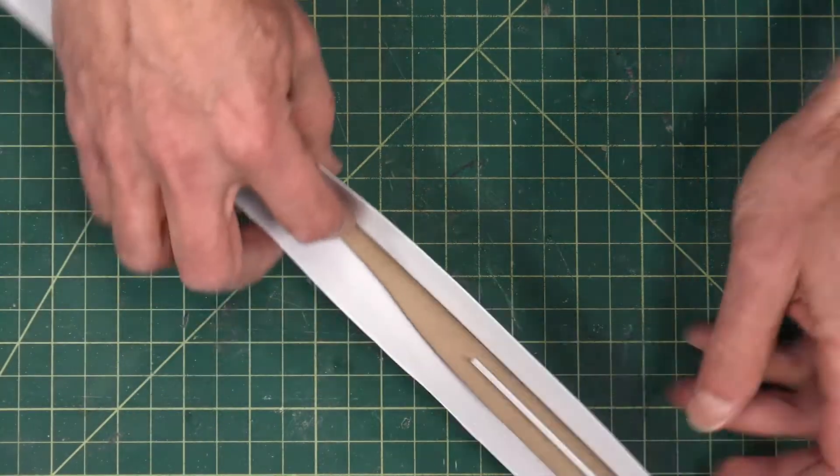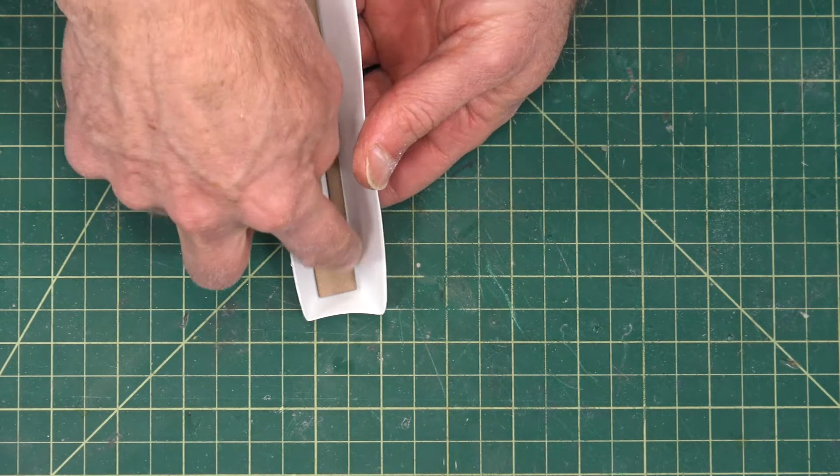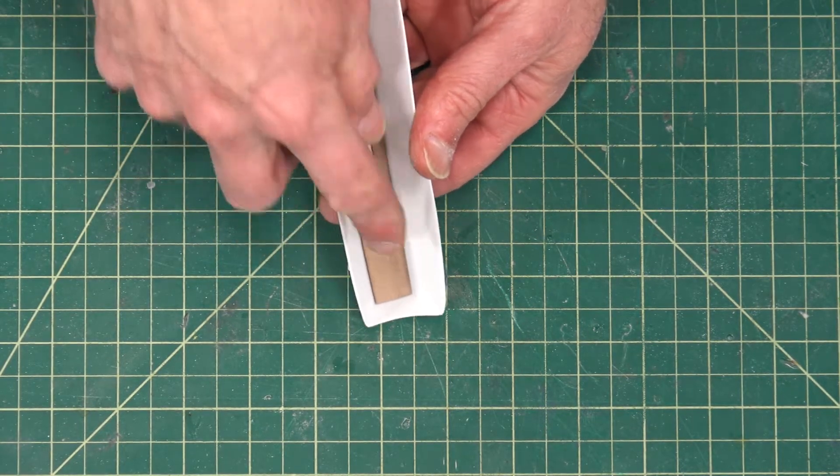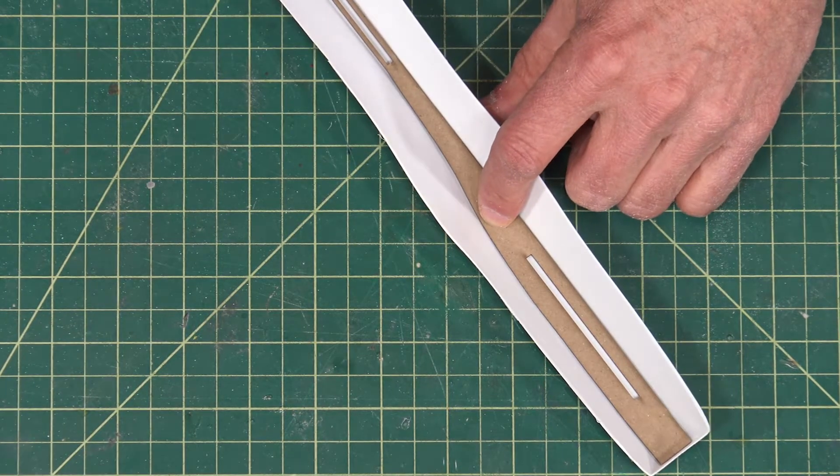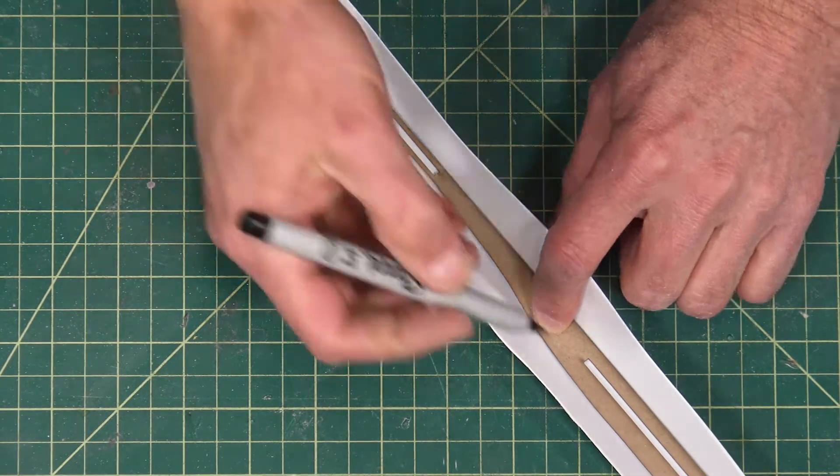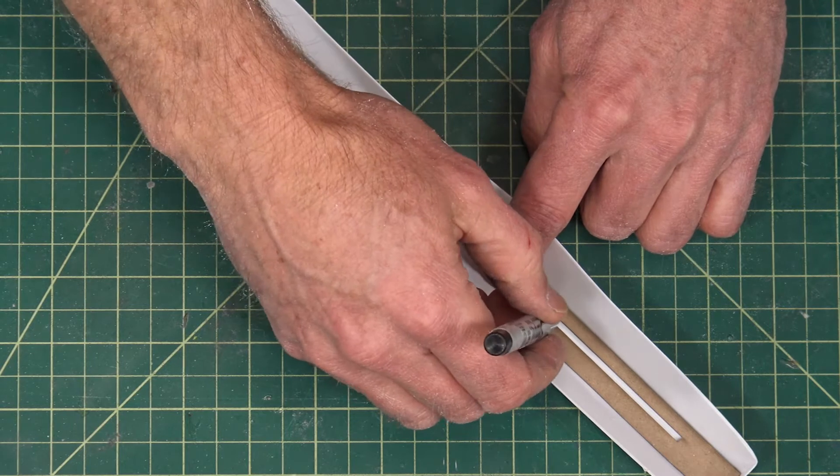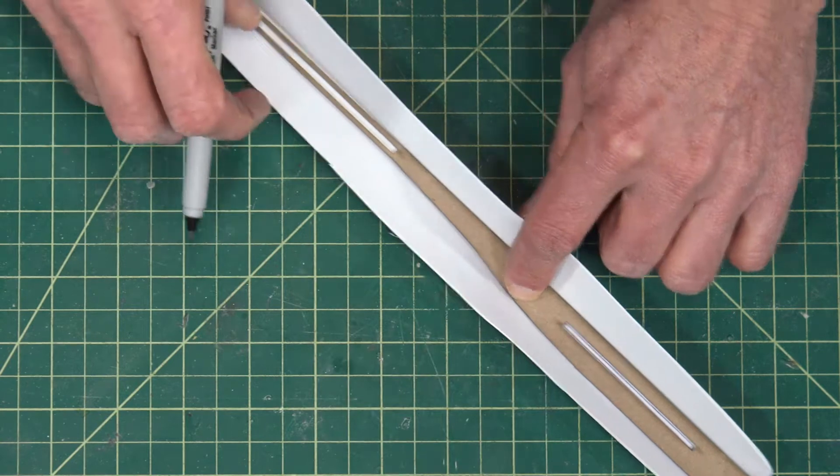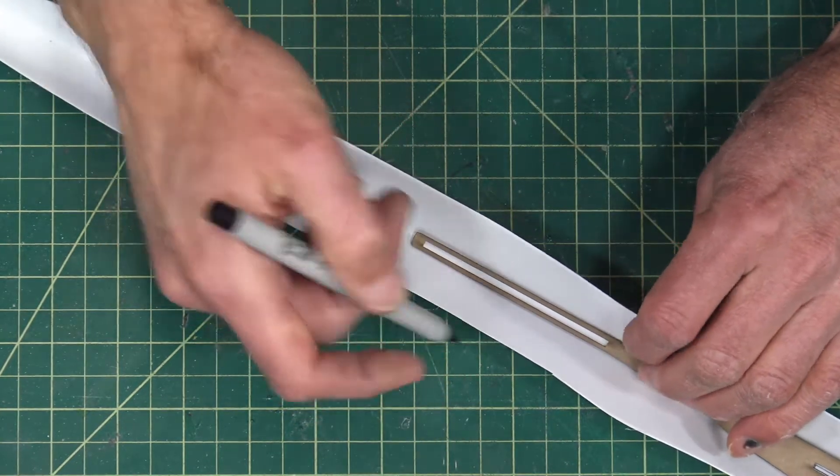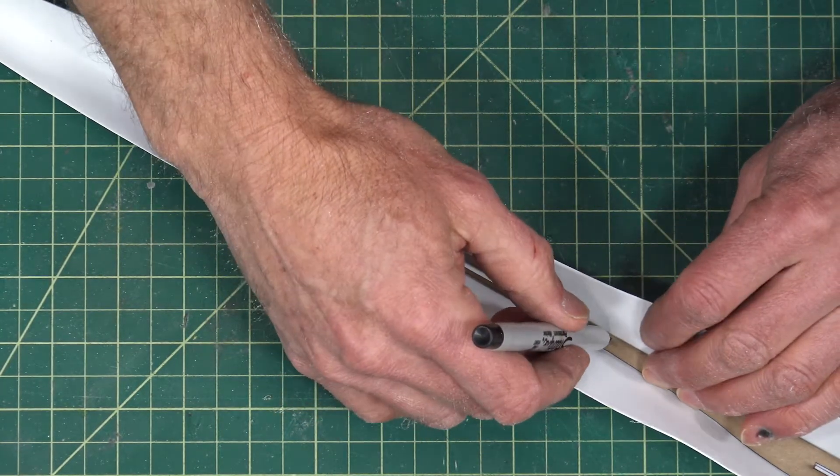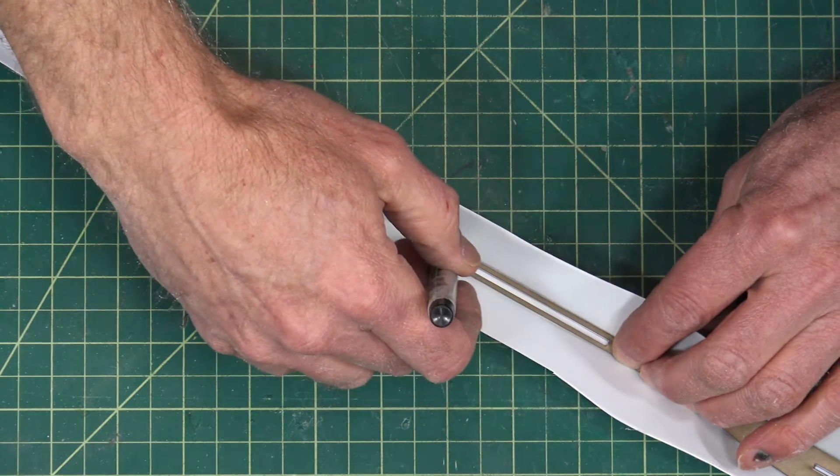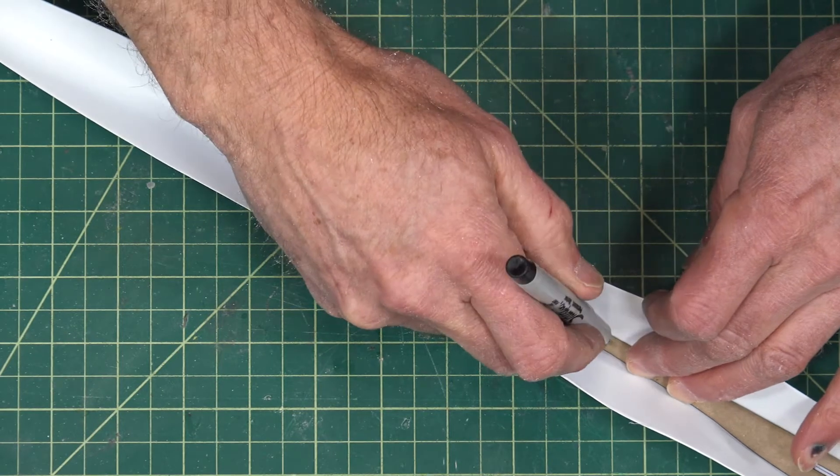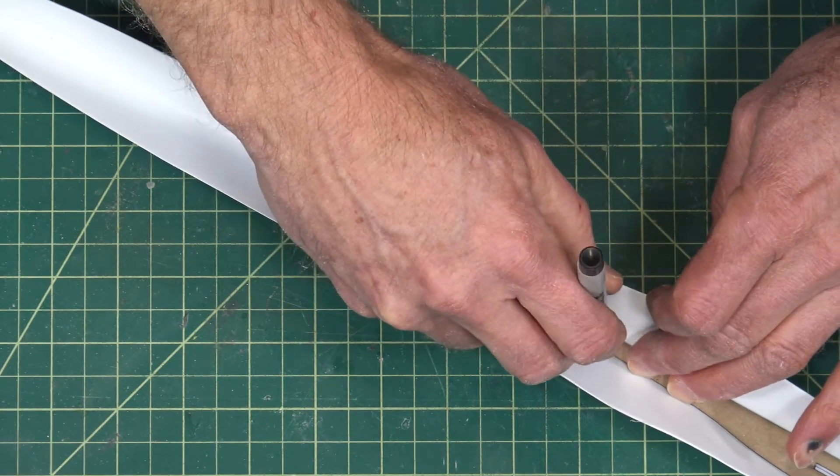So first I want to drop it in. And then I want to align this back edge here at the back of the fairing like that. And I'm going to draw around the template where the slot goes. This front one will want to move around on you. So try to hold it down the best you can.